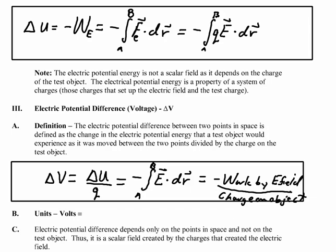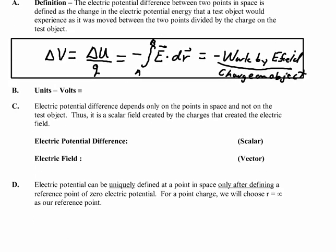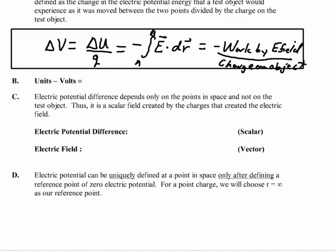Now the units of this thing are not the units of energy. They are the units of energy per charge, or put another way, they are the units of joules per coulomb. We give this a new name, named after the person who did a lot about Alexander Volta, and it is called Volts.